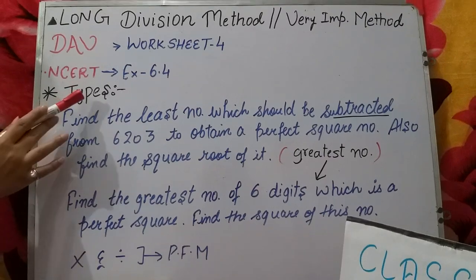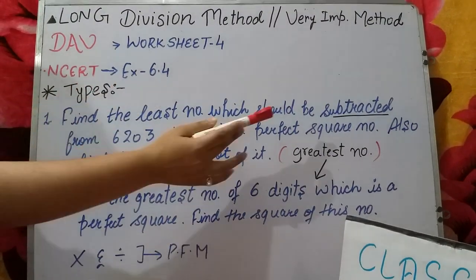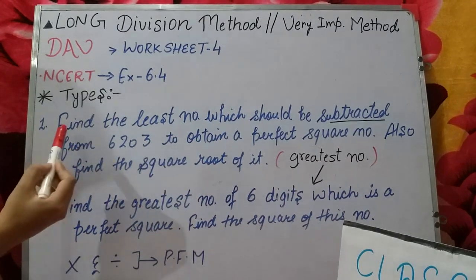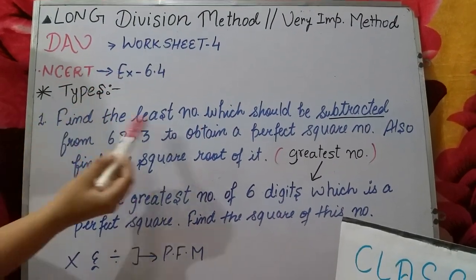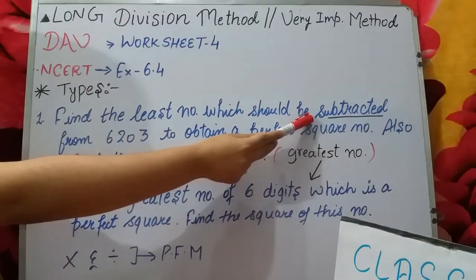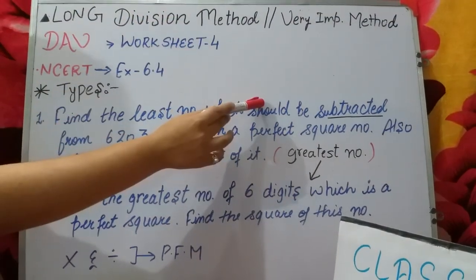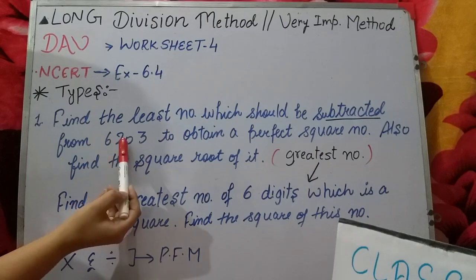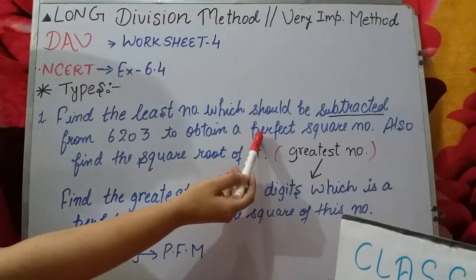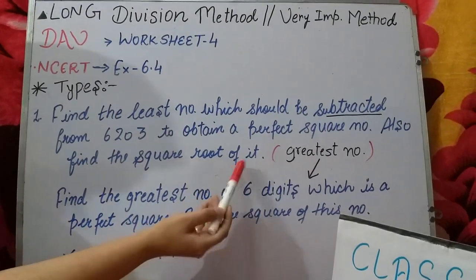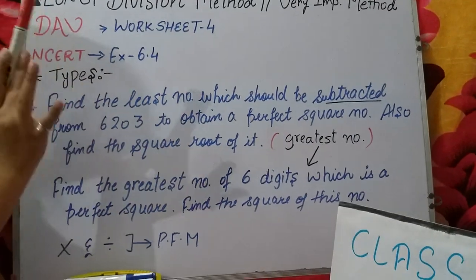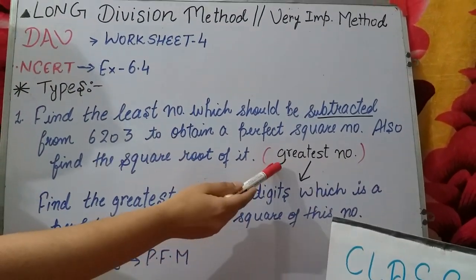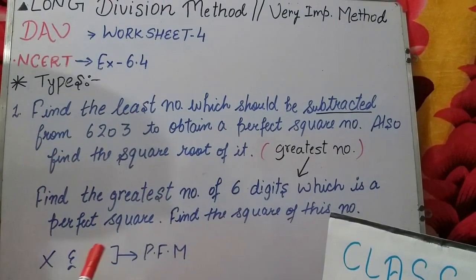In the previous video we studied the types of this method. We discussed the subtracted method under the long division method: find the least number which should be subtracted from 6203 to obtain a perfect square number, and also find the square root of it. We discussed all these questions in our previous video. Now in this video I will tell you about the greatest number written in the bracket.